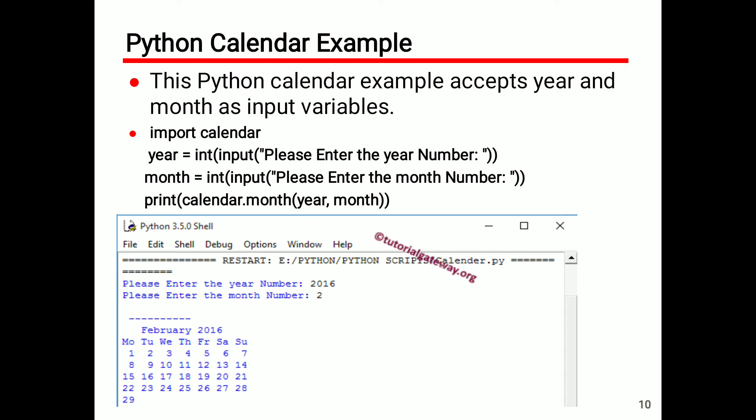month = int(input('Please enter the month number:')). Then print(calendar.month(year, month)). Here we have to execute this particular calendar program.